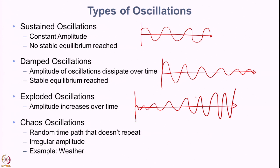A fourth type — if a system does not adhere to sustained, damped, or exploded oscillations — we call them chaos oscillations, where the random time path does not repeat itself and the amplitude is quite irregular. A typical example could be the weather.